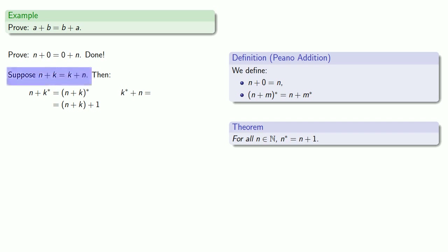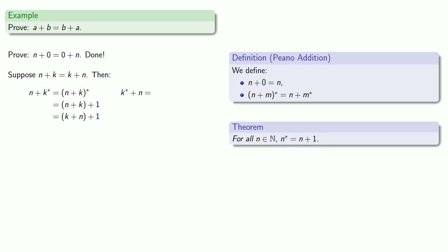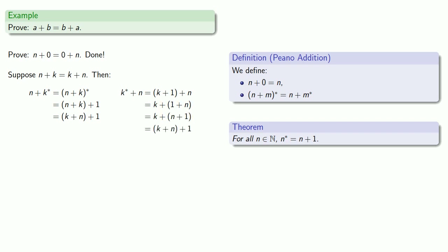We know that's k plus n plus one. Let's see if we can figure out what k star plus n is. We know that n star is n plus one, so k star is k plus one. Then we can group this one plus n, and that's n plus one. We can regroup it, and there's our proof.